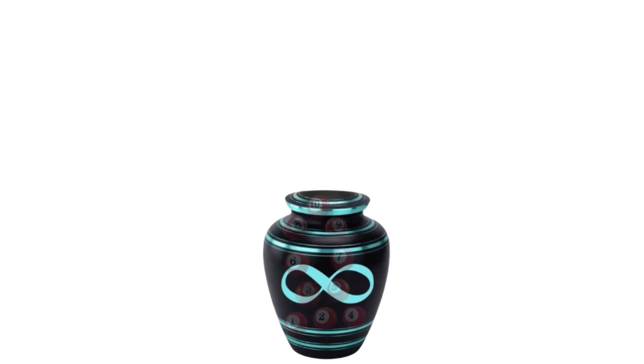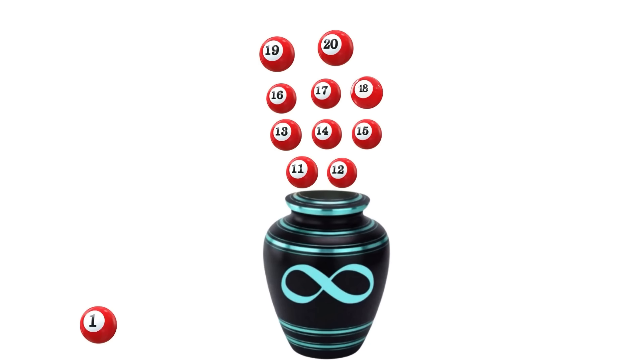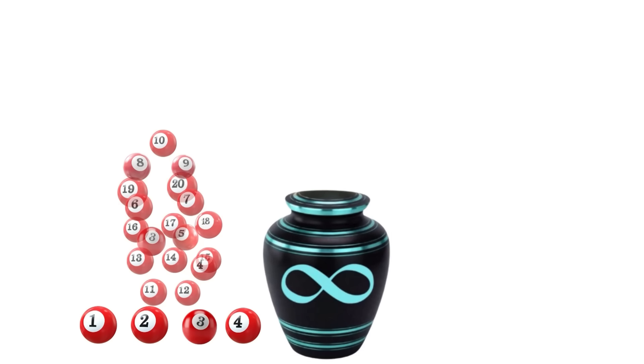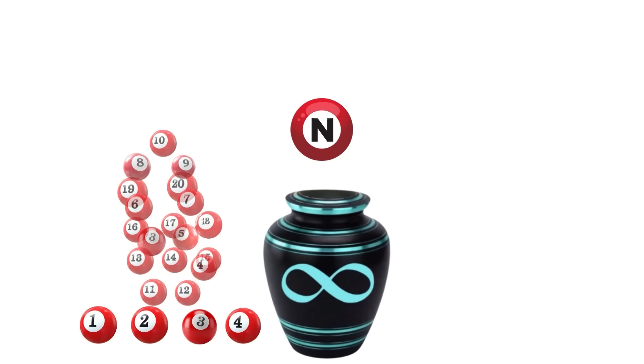At step 1, you put in balls 1 through 10 and remove ball 1. At step 2, you put in balls 11 through 20 and remove ball 2, and so on. For each step number N, the ball numbered N is removed from the vase. Eventually, ball number 1000 will be removed, then the ball number 1 million, and so on.